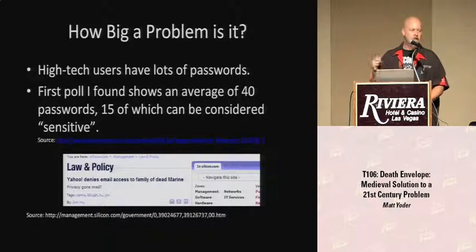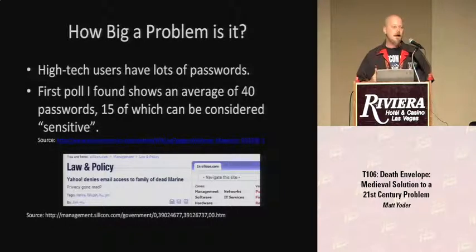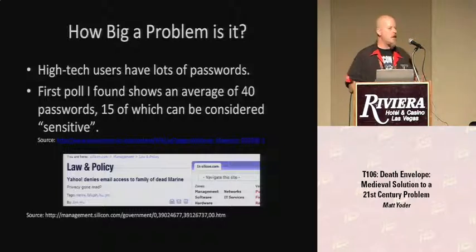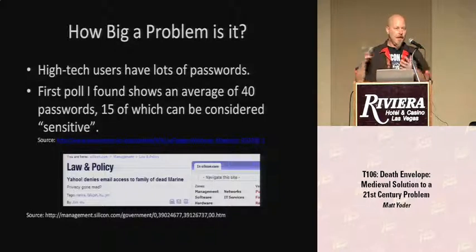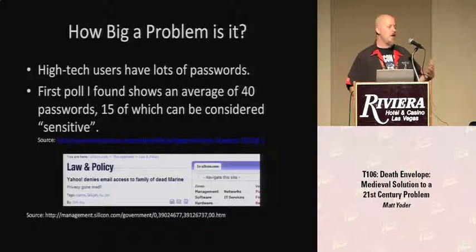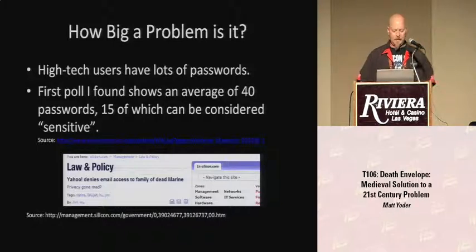Some of you may remember there was a Marine who died in Fallujah, and there was a huge battle between his parents and Yahoo about getting access to his email. They basically wanted to know what their son had been doing, who he'd been communicating with, and let people know he had died. Yahoo basically said no — their policy says you don't get access to his email if you haven't got his password. Point being, if they had had his password in the event of his death, they would have gotten what they needed.